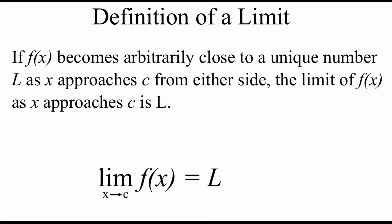Here's our definition for what a limit is. If f of x becomes arbitrarily close to a unique number, which we're going to call L, as x approaches some number c from either side — left and right — then we say the limit of f of x as x approaches c is L. It might be confusing right now, but I think it'll make more sense once we look at some examples.